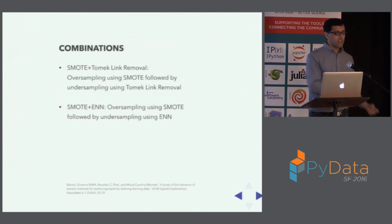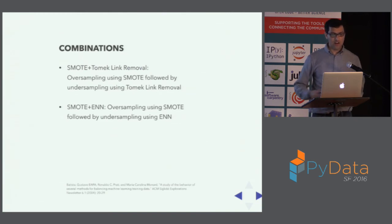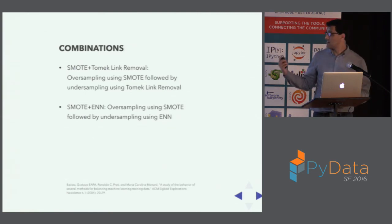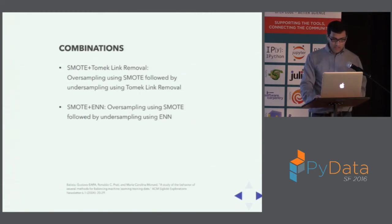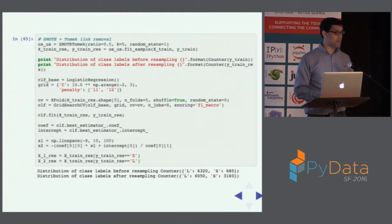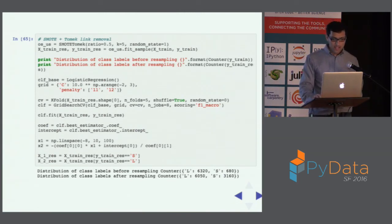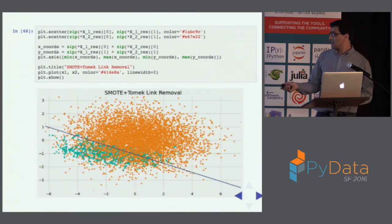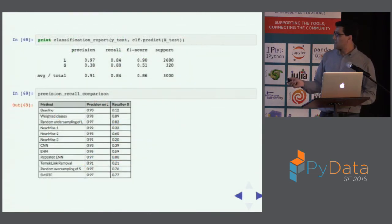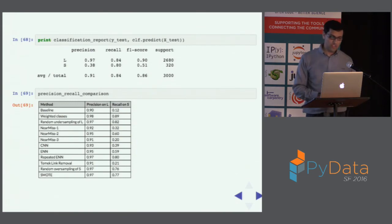You can combine any of these techniques. Two combinations that have had success in literature are SMOTE followed by Tomek Link removal, and SMOTE followed by Edited Nearest Neighbors. SMOTE + Tomek Link removal, with no additional magic beyond running the two techniques in sequence, gives a much better decision boundary and achieves 80% recall on the minority class — better than either technique alone.